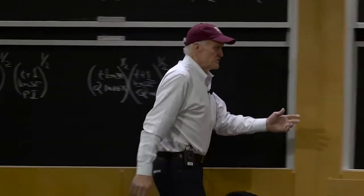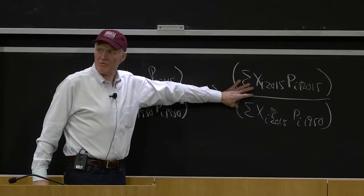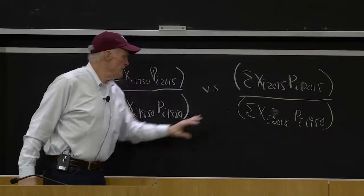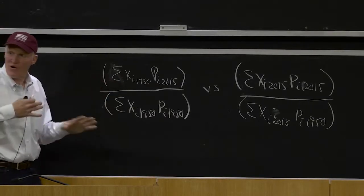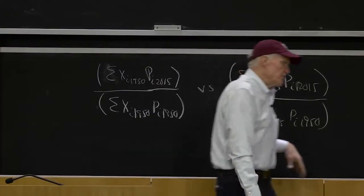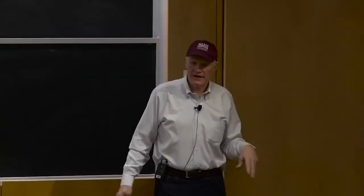So this would give the cell phone way too much weight, right, because you would never buy it in 1950. This would give the cell phone way too little weight, right? That is, it's hard to know how you do it. So one way to do it is what's called a chain price index.